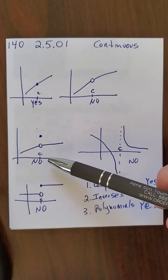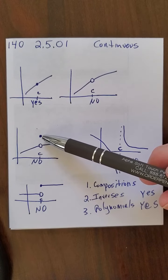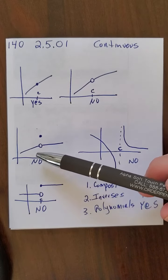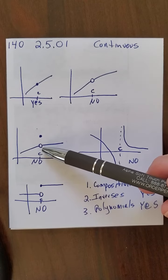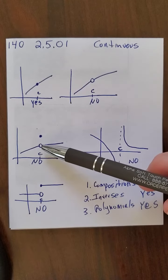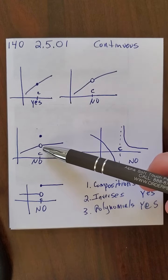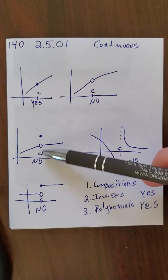Now, in this case, the function value does exist, because you see the point is up there, and the limit exists, because the limit on both sides come to the same value. But the limit and the function value are not the same thing. See here, everything is the same. Here, it's different.